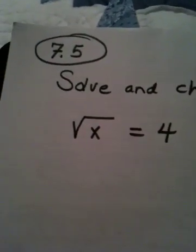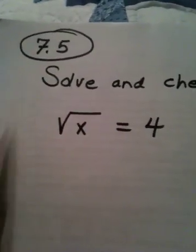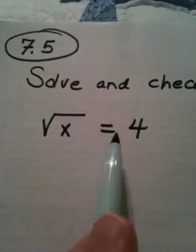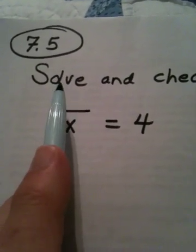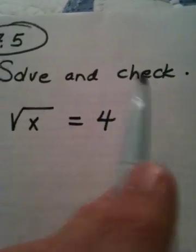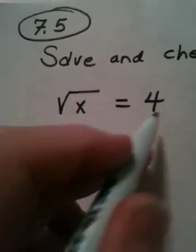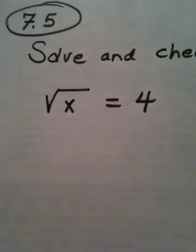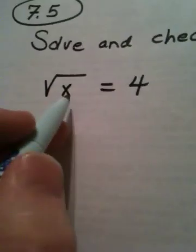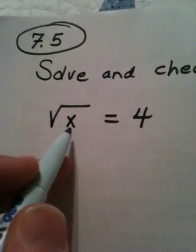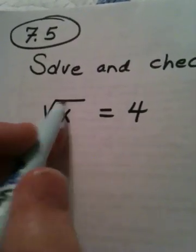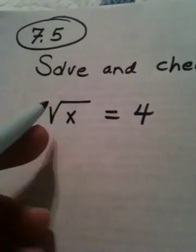Okay, ladies and gentlemen, when we're in section 7.5, the directions for this equation ask us to solve it and then check it. So, first thing I need to do here, this x is trapped under this square root, so I need to make this square root disappear so that I can get to x.